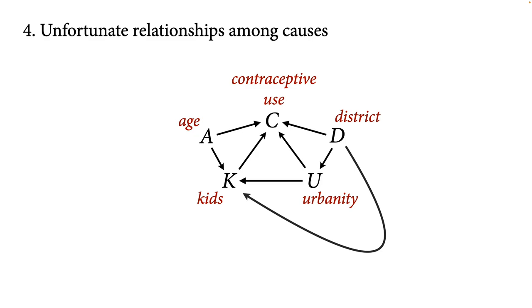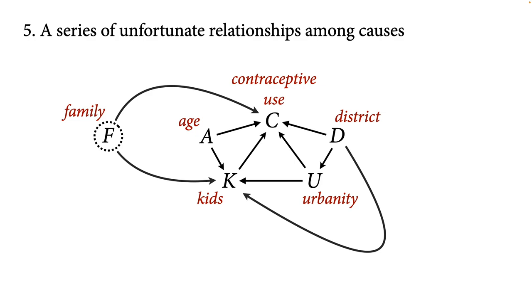There are also unfortunate relationships — you shouldn't just draw the stuff that's easy for you; imagine the haunting, the ghosts in the dark. For example, unmeasured things about districts may also influence features of individuals in those districts — things about the history of particular districts which influence family size, like ethnic composition. And then imagine stuff you haven't measured that may also haunt you. Families can be quite large — around 1980 a typical woman would have had seven or eight kids — so there will be a bunch of sisters within a family who may be similar in contraceptive use and family size because of common socialization. This is another kind of cluster variable, but if we don't have it in the dataset, it could be a confound.